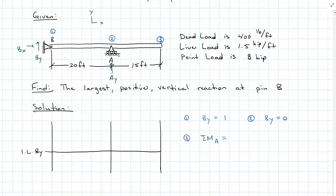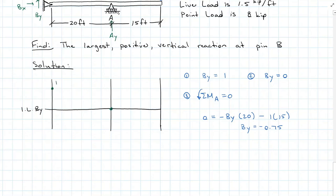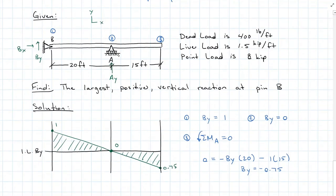Summing moments about A: 0 equals minus B_Y times 20 minus 1 times 15, and we find that B_Y is negative 0.75. Plotting that on our diagram, we start at 1, come down to 0, and end at negative 0.75. This is how B_Y is influenced as a load moves across our system. It's asking specifically for the positive vertical reaction, because we can also get a negative vertical reaction at B on the right side.